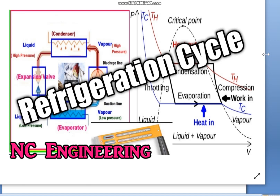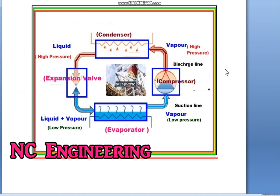All air conditioning and refrigeration equipment — the working principle is based on the refrigeration cycle or vapor compression refrigeration cycle. In this cycle we have 4 mechanical components: number 1 is compressor, number 2 is condenser, number 3 is expansion or throttling valve, and number 4 is evaporator.